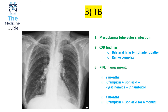This is an example of TB, commonly due to Mycobacterium tuberculosis infection. The classic chest x-ray findings of TB involve bilateral hilar lymphadenopathy and the presence of a Ghon complex. On the chest x-ray you can see calcified little nodules quite close to the hilar region — that's your Ghon complex.